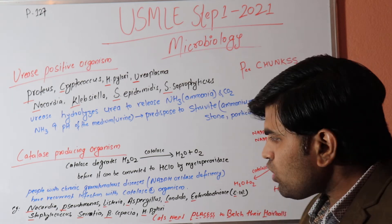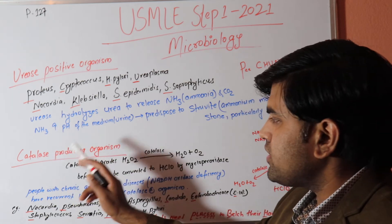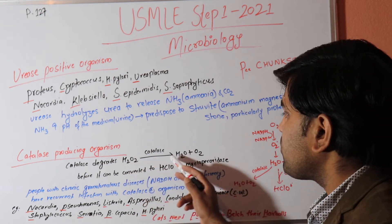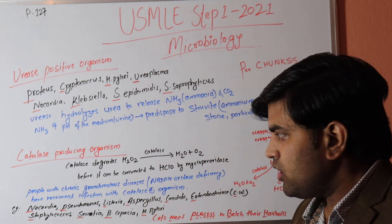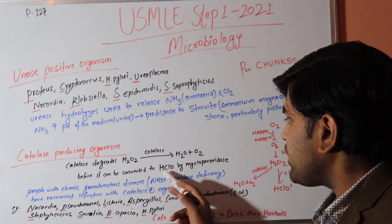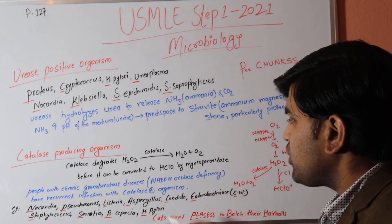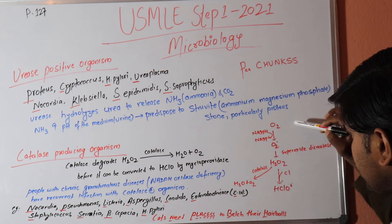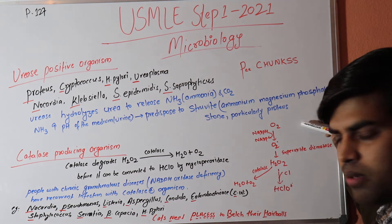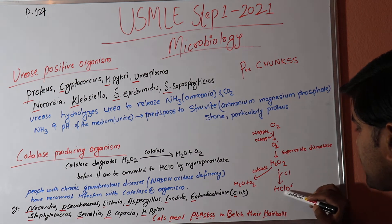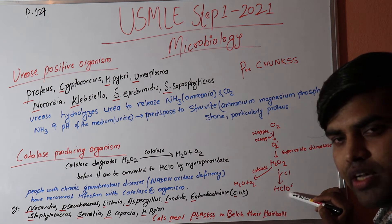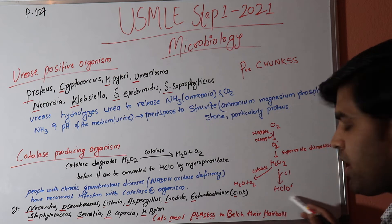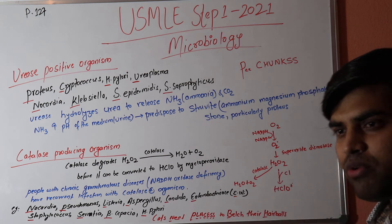Catalase is an enzyme in bacteria that degrades hydrogen peroxide, converting it into water and oxygen — before it can be converted into hypochlorite by myeloperoxidase. To understand this, we need to review the macrophage killing mechanism from immunology.